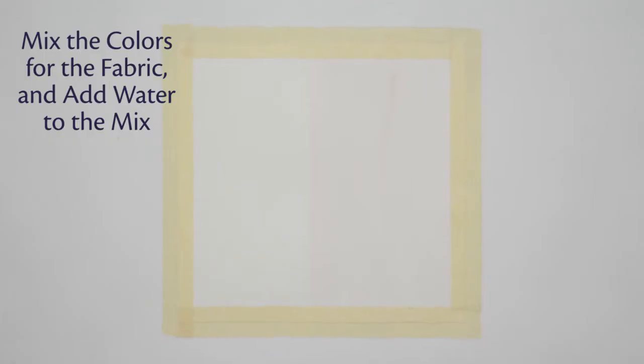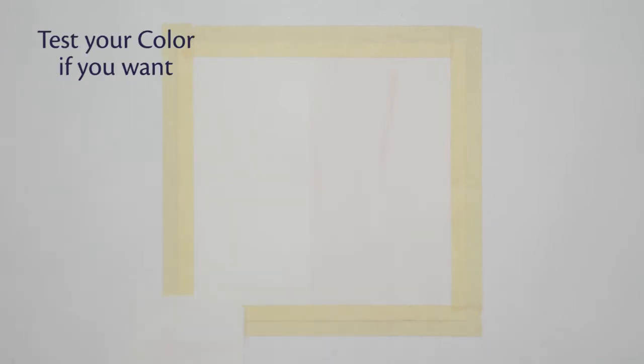First layer of color. Start mixing the colors for the fabric, and add water to the mix to make it light. You can test your color if you want. Start painting the first layer of color.